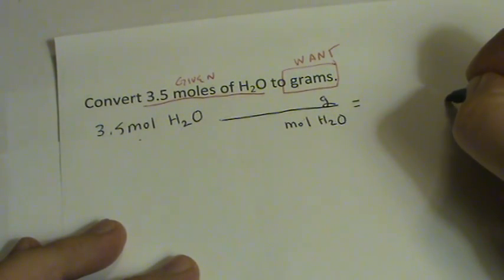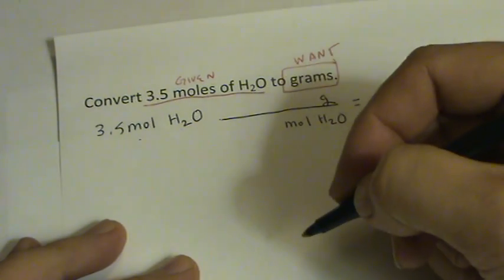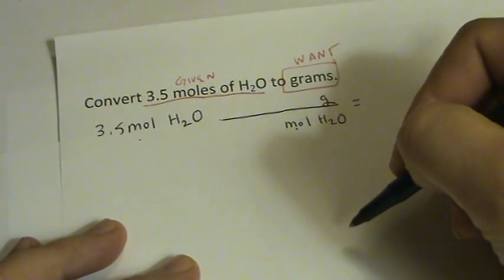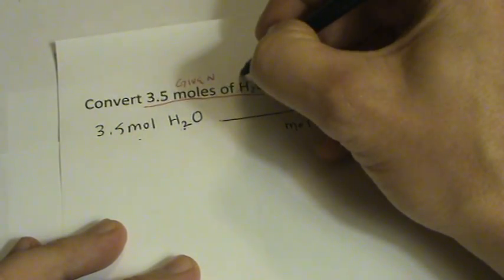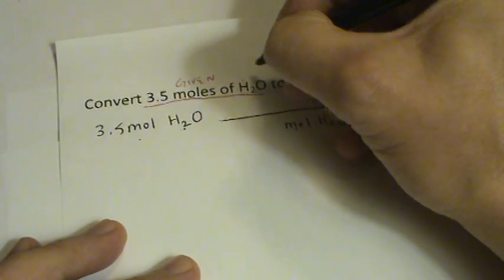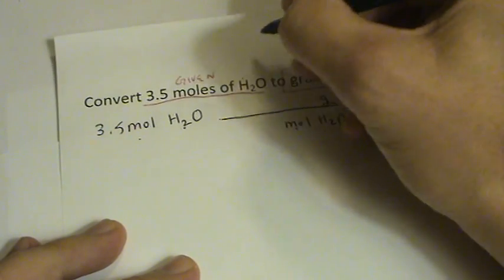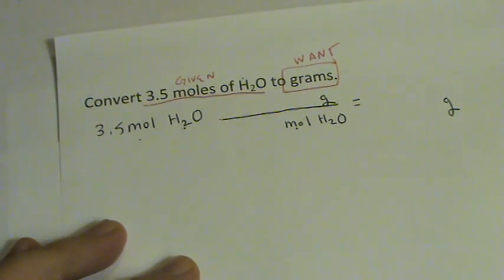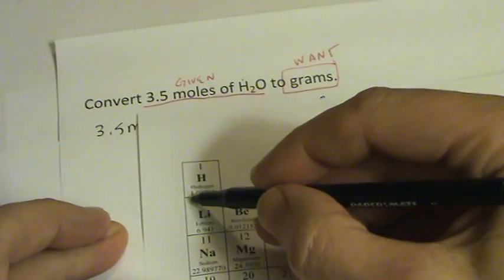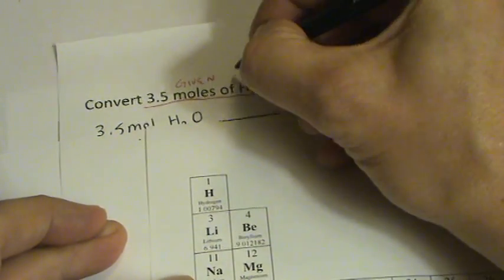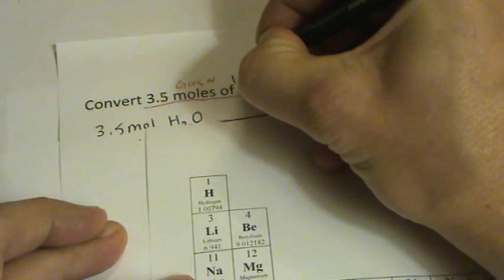So that'll give me an answer of grams. Grams per mole is just the GFM. And since we're dealing with water, let's find the GFM of water. Well, I've got to get my periodic table out here. Let's look up hydrogen. Hydrogen is 1.00794. Let's say 1.01.